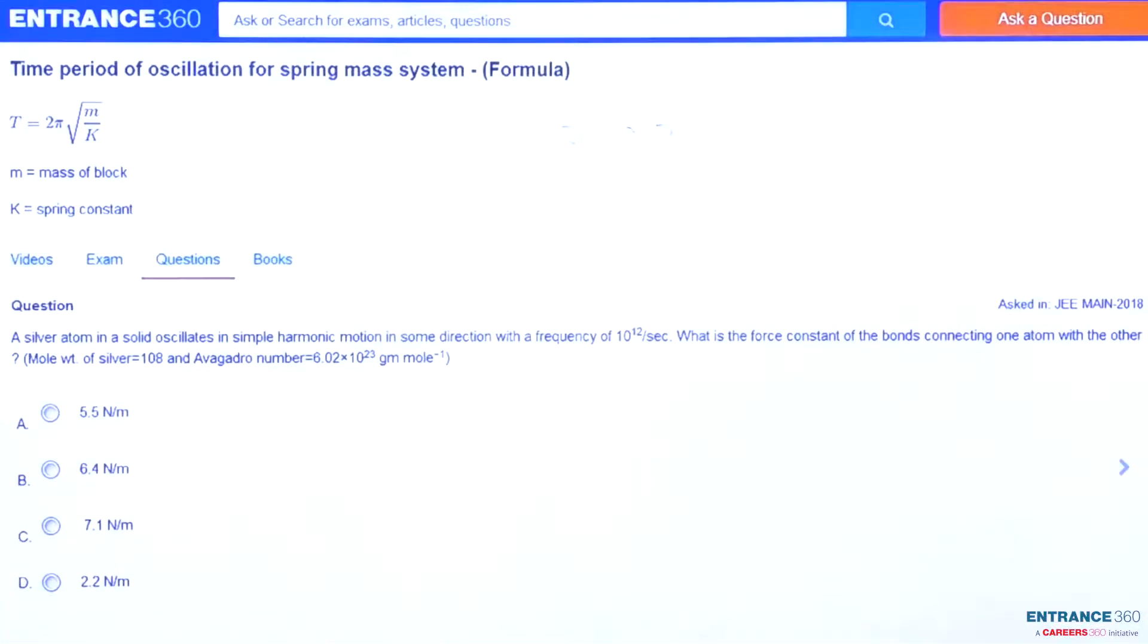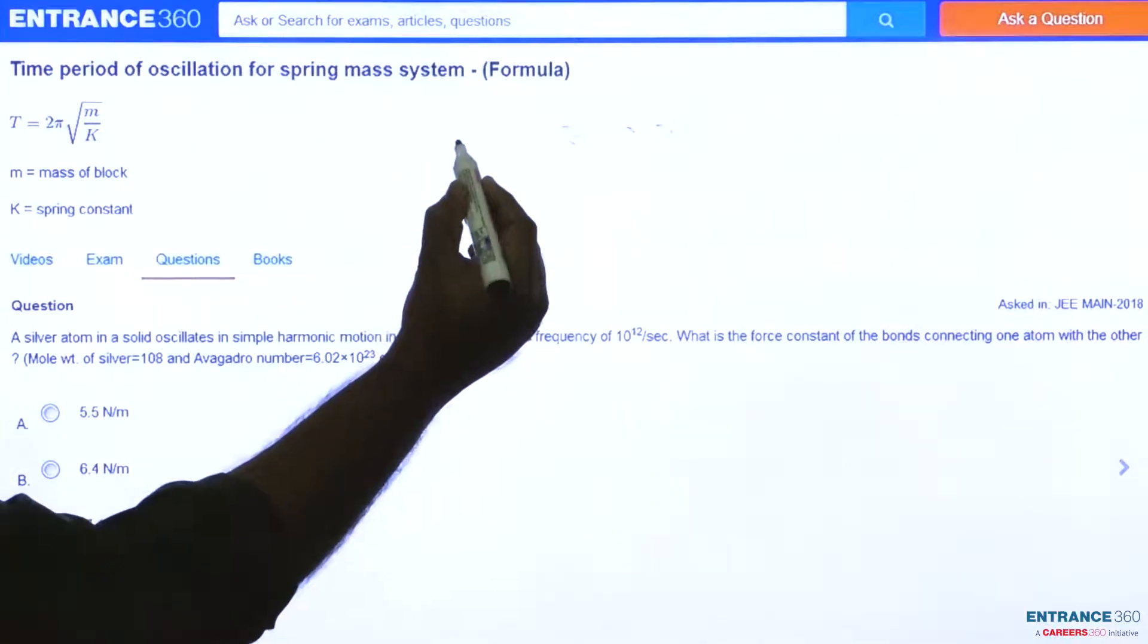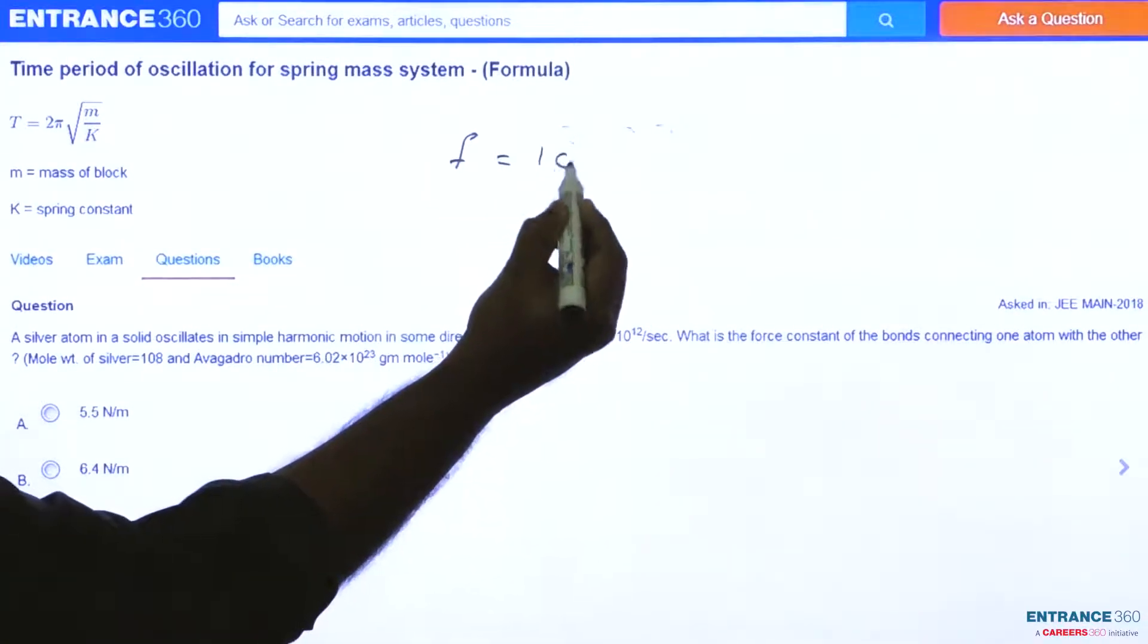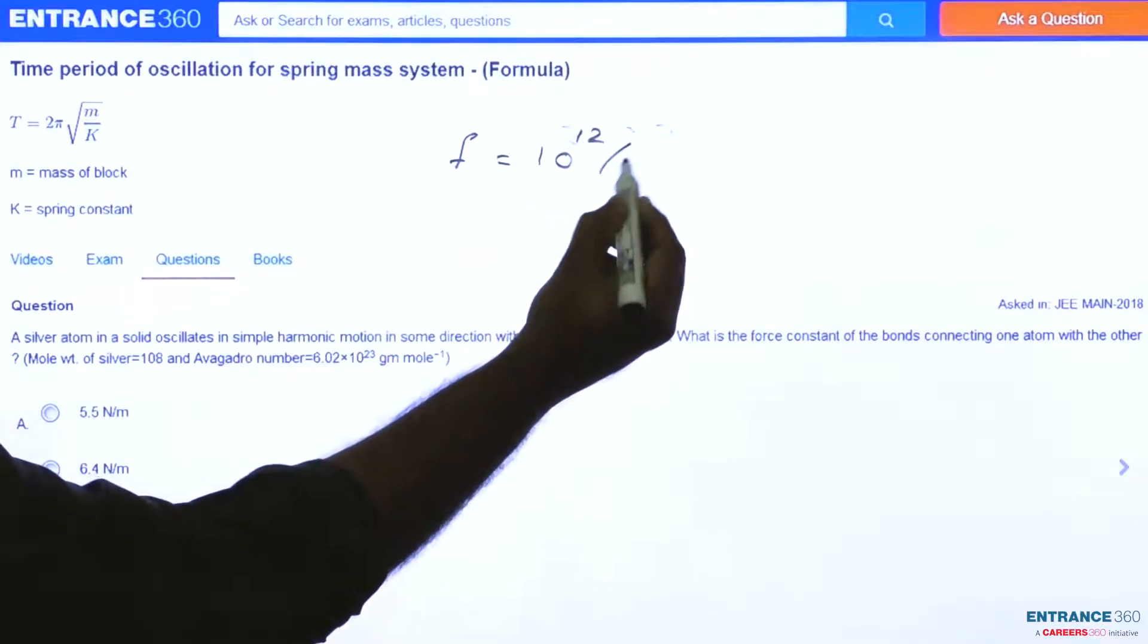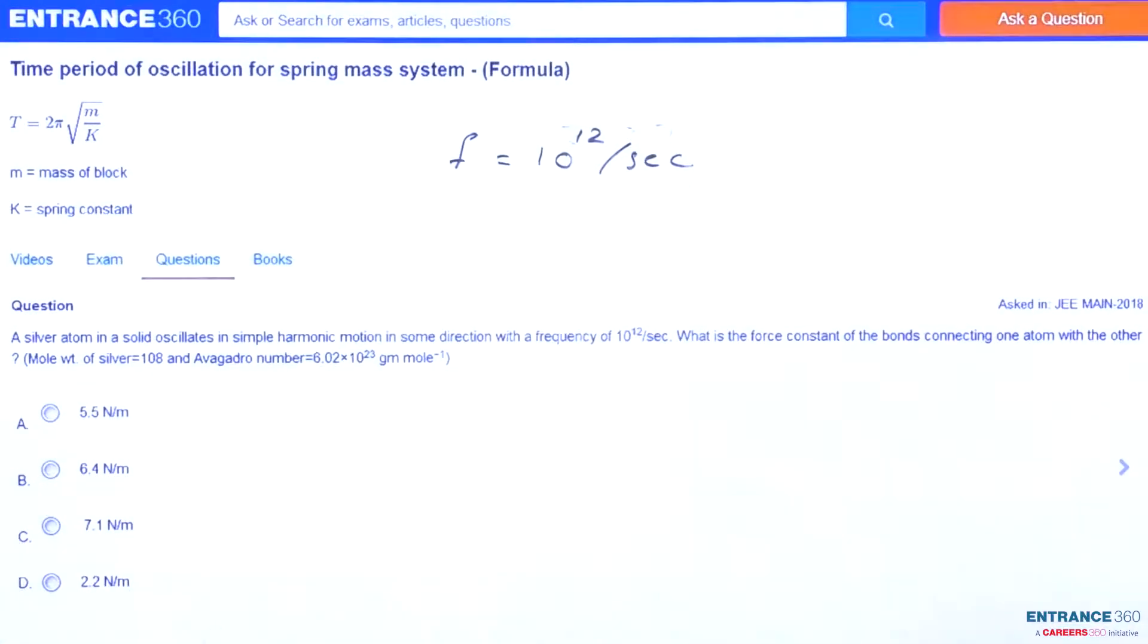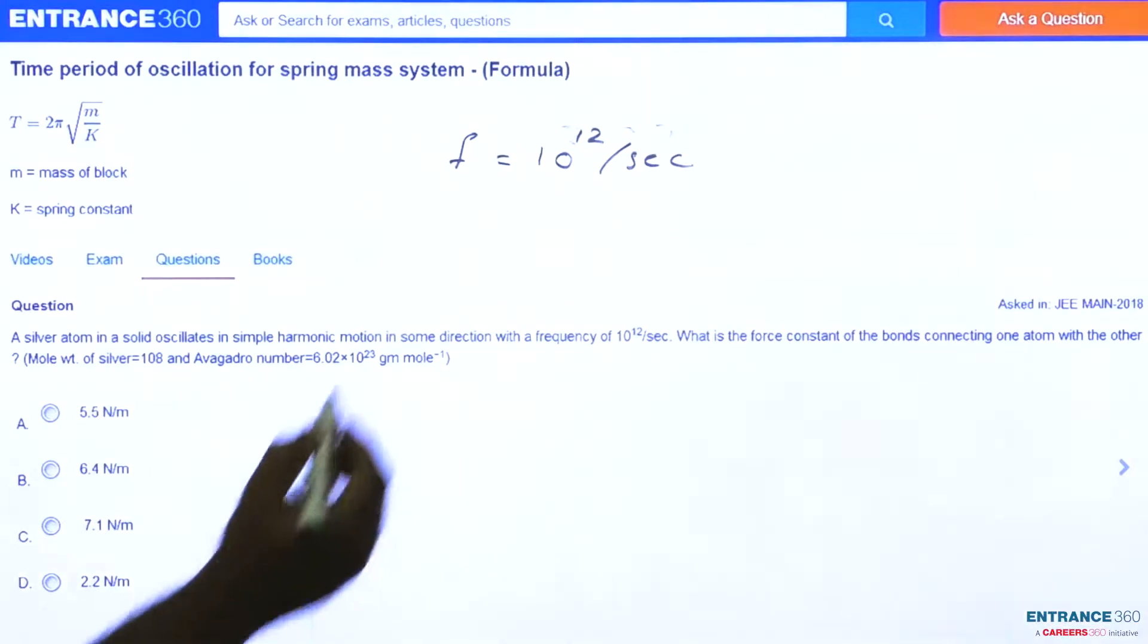Hi everyone, let's discuss a question from chapter oscillation and waves. This is asked in JEE Main 2018. The question says a silver atom in a solid oscillates in simple harmonic motion in some direction with frequency 10 raise to 12 per second. What is the force constant of the bond connecting one atom with another?